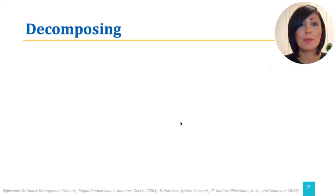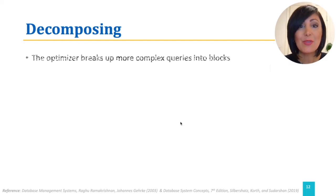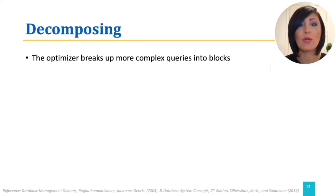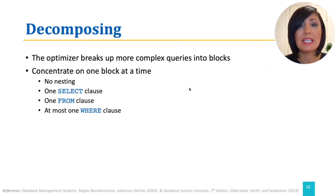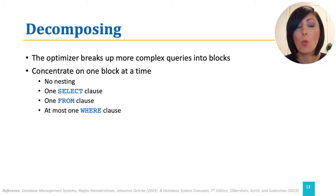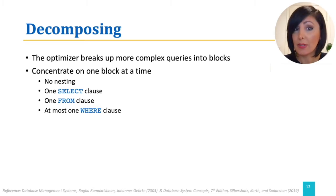To do that, the optimizer needs to first break the complex queries into simpler blocks and focus on optimization of one block at a time. A block is chosen in a way that it does not include nested queries, and it has one SELECT, one FROM, and at most one WHERE clause.